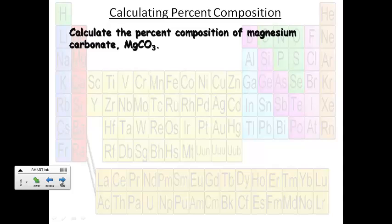Here's a little practice problem. It wants us to calculate the percent composition of magnesium carbonate. Now, to get percent composition, what you want to do is you want to do the part over the whole and then times 100.